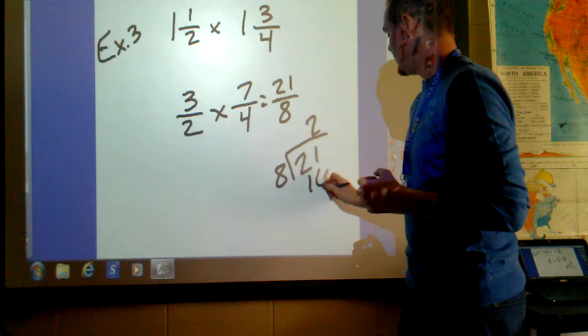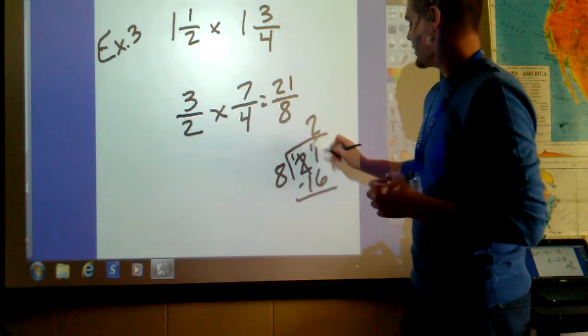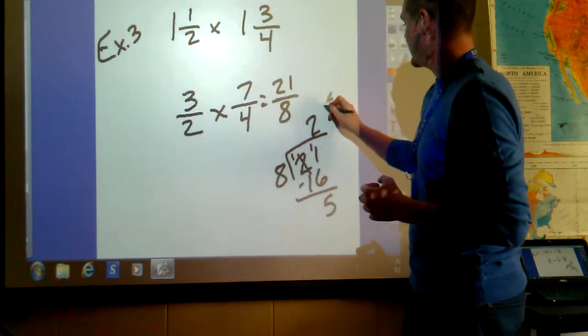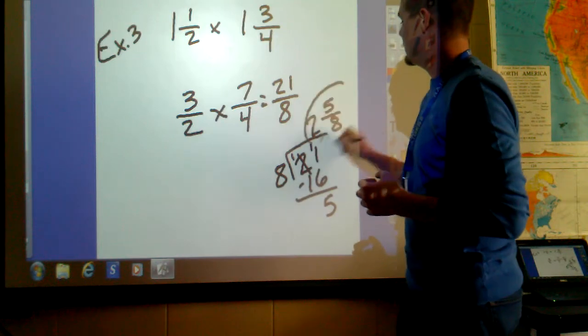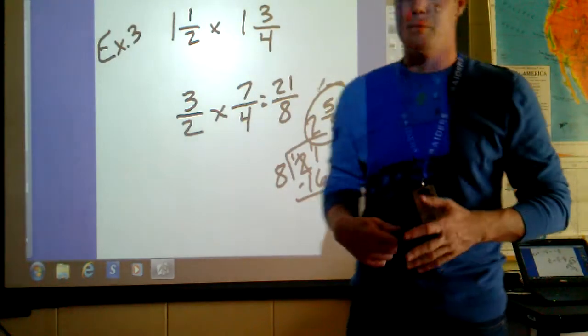2 times 8 is 16. Subtract. 11 minus 6 is 5. My answer ends up being 2 and 5 eighths. And that's what we'll write down for example 3.